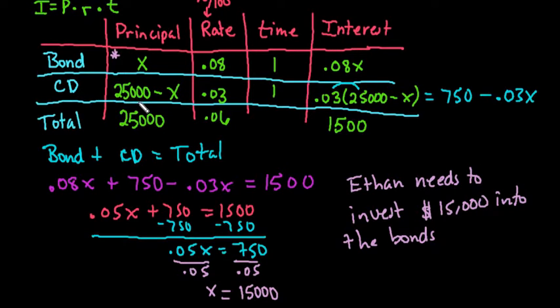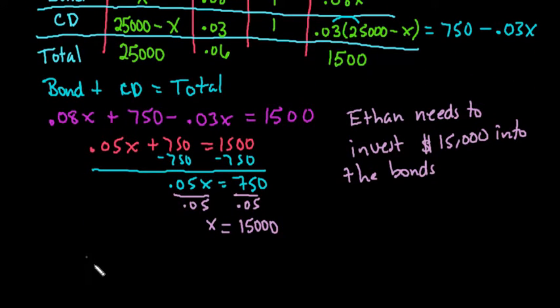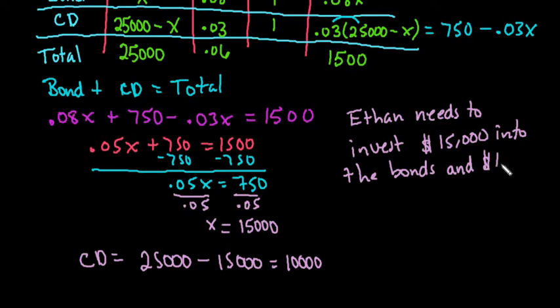And then our CD, we would just simply do $25,000 minus $15,000. So the CD would equal $25,000 because that's our total amount that we're investing, minus the $15,000, which gives us $10,000 into the CD or the certificate of deposit to earn 6% per year.